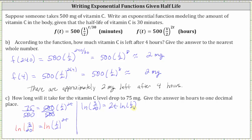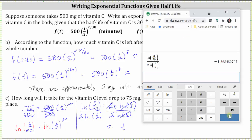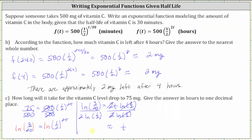Now we're solving for t, so we divide both sides by two times natural log of one-half. On the right, two divided by two simplifies to one, and natural log of one-half divided by itself simplifies to one, leaving us with t. We evaluate the quotient on the left and round to one decimal place. Because we used the function with time in hours, this answer is also in hours. Because of the six in the next decimal place, we round up to 1.4. The vitamin C level will drop to 75 milligrams in approximately 1.4 hours.